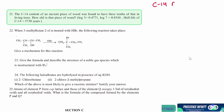Carbon-14 is a radioactive element, and radioactive decays are always first order. So even if it is not mentioned, we will take it as first order. For a first-order reaction, we can say that half-life is 0.693 divided by K.